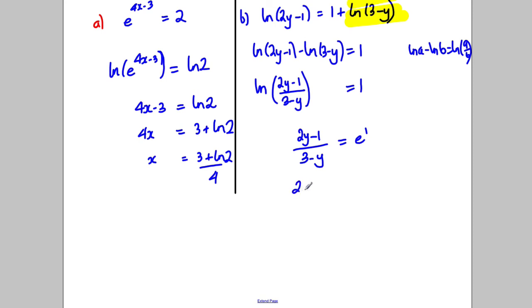So 2y subtract 1 would be e multiplied by 3 subtract y. Multiply out the brackets: 2y subtract 1 is 3e take away ey. Now make all the y's on one side and everything without a y together.